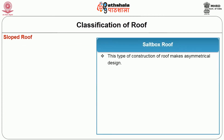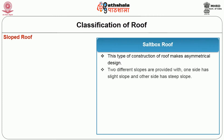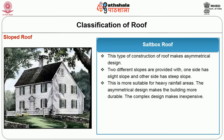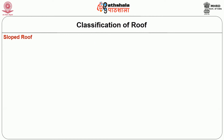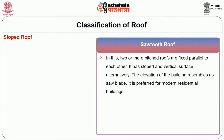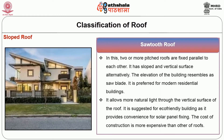The saltbox roof is an asymmetrical design with two different slopes — one side has a slight slope and the other has a steep slope. This is more suitable for heavy rainfall areas, and the asymmetrical design makes the building more durable, though the complex design makes construction expensive. The saw-toothed roof has two or more pitched roofs fixed parallel to each other with sloped and vertical surfaces alternating, giving the building elevation a resemblance to a saw blade. It is preferred for modern residential buildings, allows more natural light through the vertical surface, and is adjusted for eco-friendly buildings as it provides convenience for solar panel fixing. The cost of construction is more expensive than other roof types.